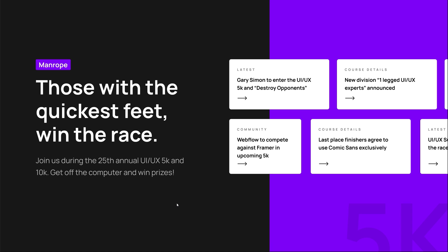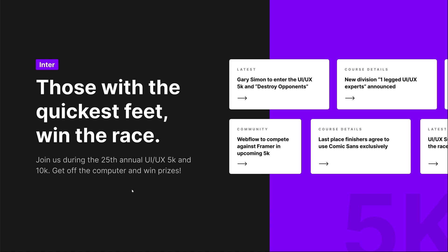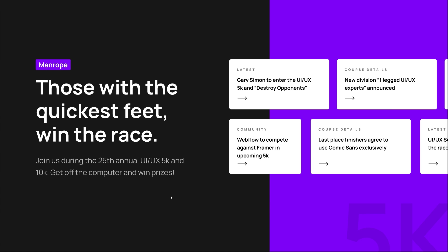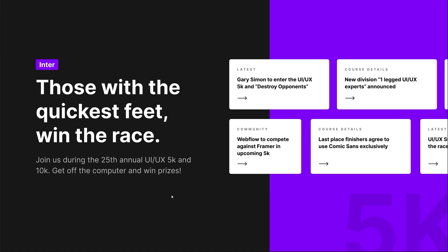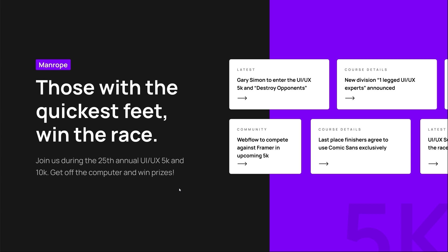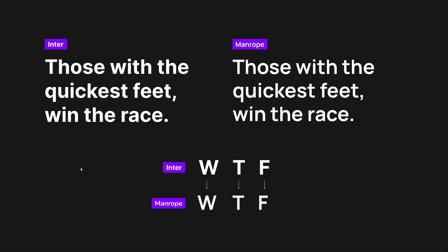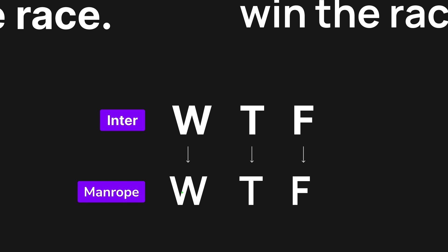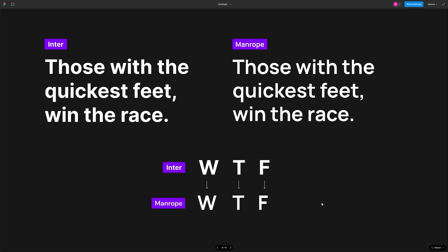Let's also take a look at Manrope, another popular font. Comparing Inter and Manrope side by side, there's not a huge difference — there's not much of a massive difference between any of these seven fonts, of course. But if we look at Inter versus Manrope, it's not quite as bold, and it is a little bit more extended as well. The physical width of the characters — like the T — is just a little bit wider. Again, minute differences.